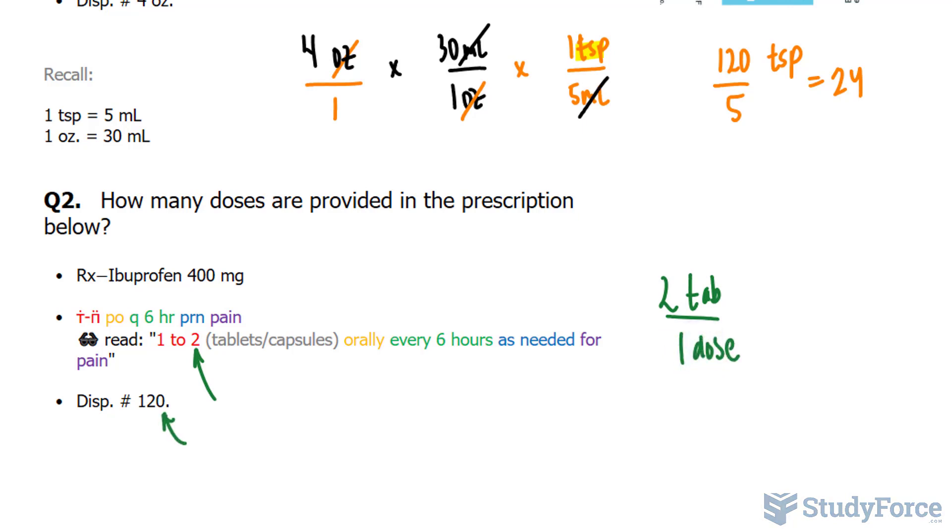Now to find the total number of doses, I'll create a proportion where I set this fraction equal to another fraction. And given that we're told there are 120 tablets in one prescription, we need to find the equivalent amount of doses. Technically, we have a ratio equaling to another ratio, and we can use cross multiplication to find the equivalent x.